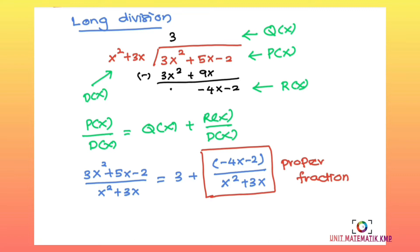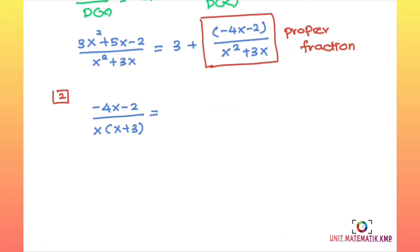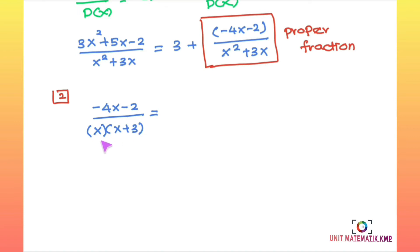We proceed with partial fractions. We want to express the proper fraction into partial fractions. The denominator is x times (x + 3) — we already factorized from x² + 3x. The first factor is linear and the second factor is also linear. For linear factors, the numerator is a constant, so it will be A over x plus B over (x + 3).